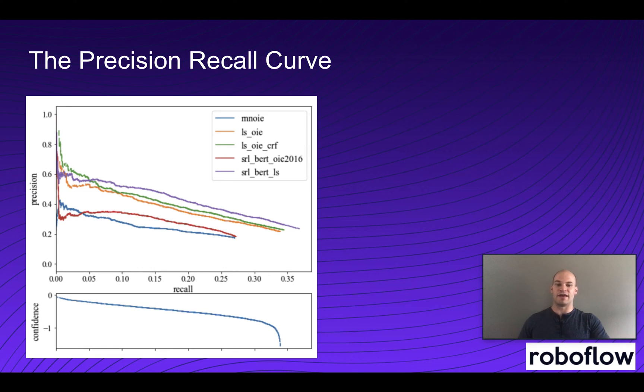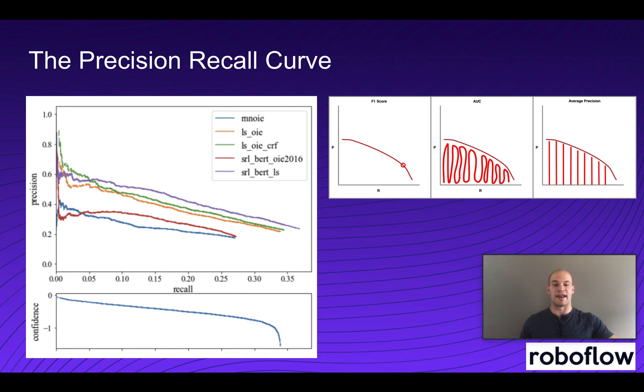Now that we have an understanding of what the precision recall curve is, we can start to look at aggregate metrics. These are metrics that summarize the entire precision recall curve. The first one is the F1 score, a single estimate of the precision recall curve where you're multiplying precision and recall together, hitting a single point that gives you an F1 score back.